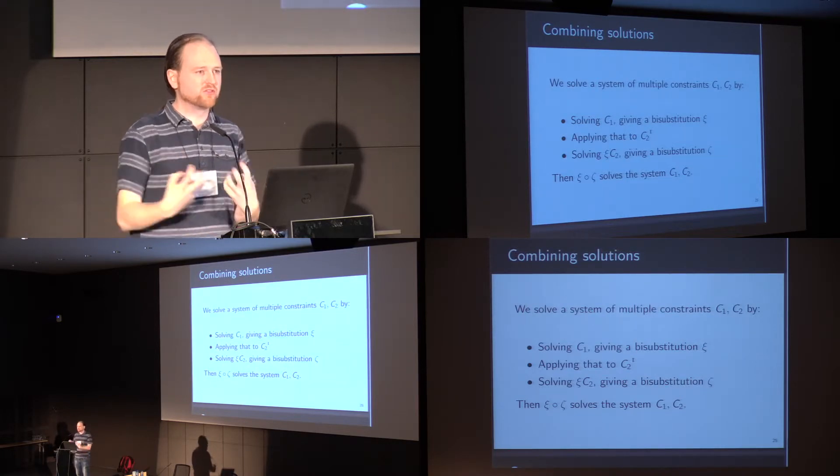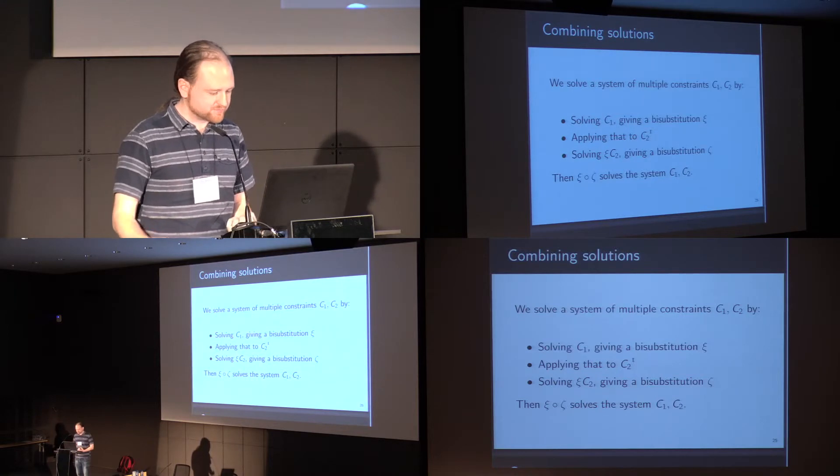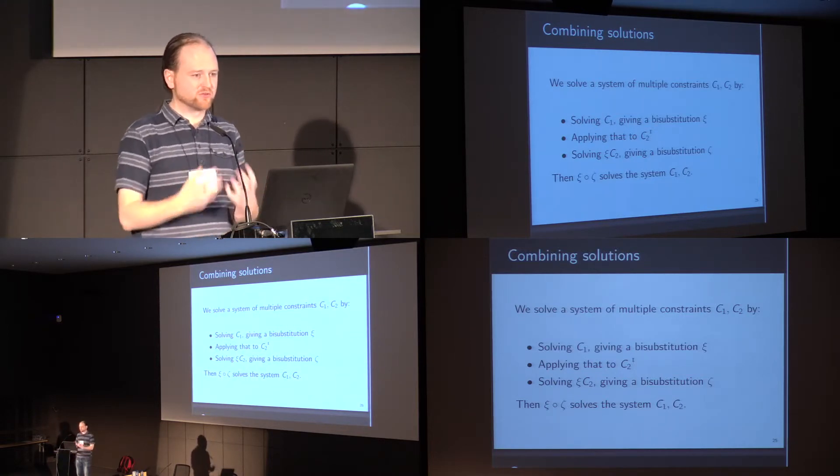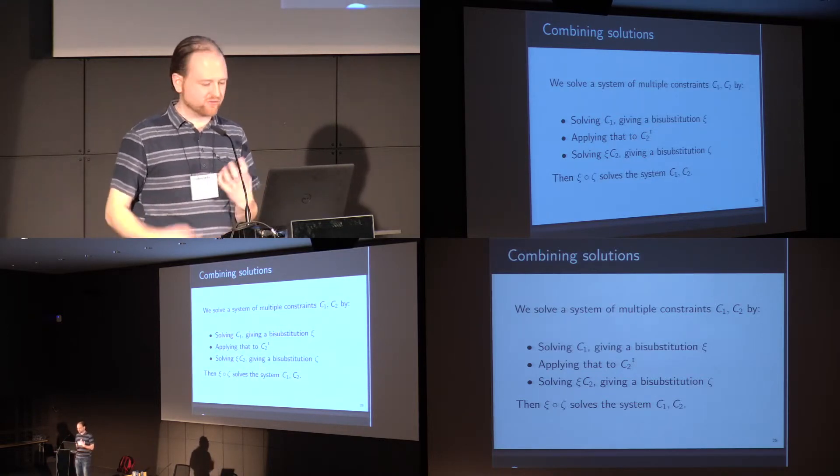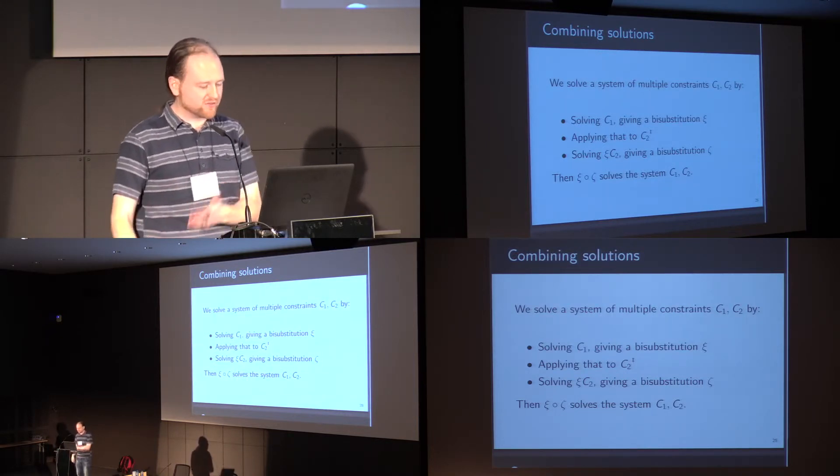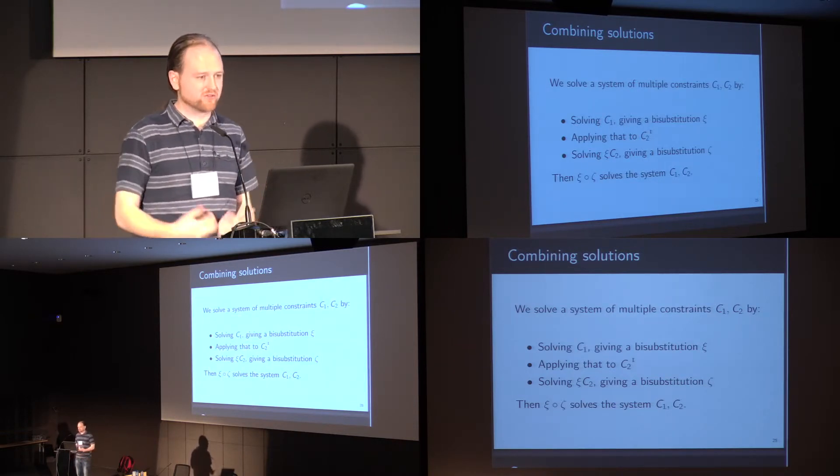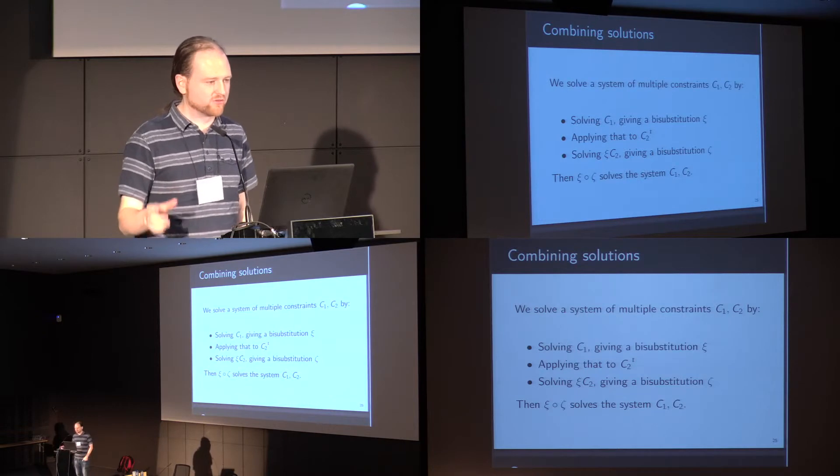When we want to combine the results of solving multiple constraints, if we have a system of constraints, this thing of c1 and c2, we first solve c1, that gives us one bi-substitution, we apply that to c2, and then we solve the result. And by composing the results of solving both these, we get a solution to the whole system. So this is fairly familiar if you've implemented a unification algorithm.